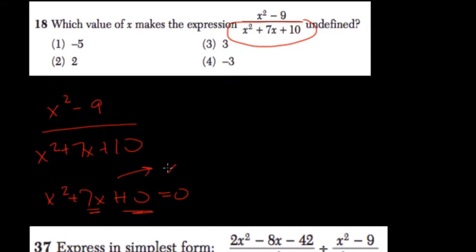So we have x and x. Factors of 10 that add to 7 are 5 and 2, so plus 5 plus 2.